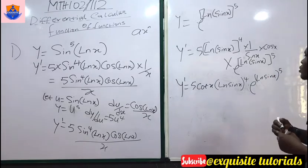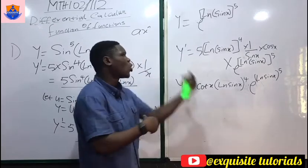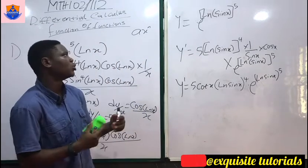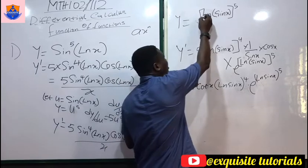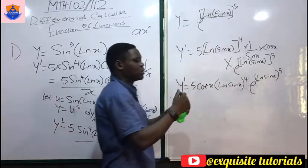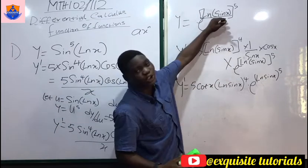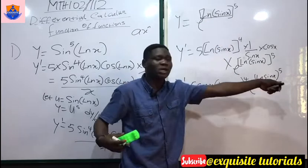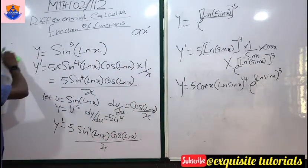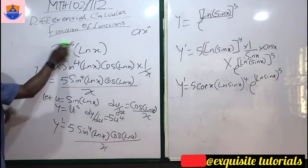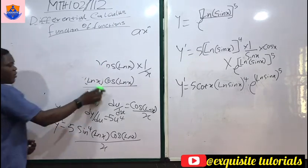This is our final answer. If you want to follow the long procedure, you let u equal everything inside and differentiate separately, but you will still need to use another chain rule. Let's do two more examples so you get more familiar with this.